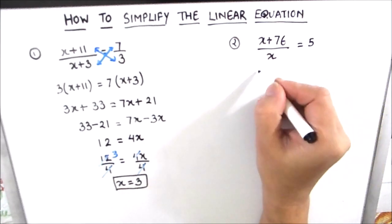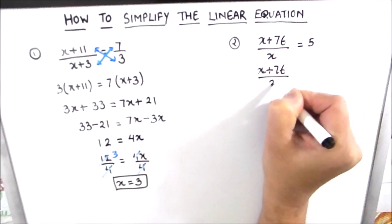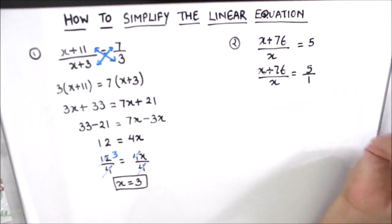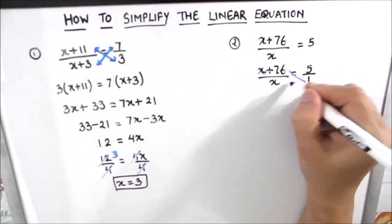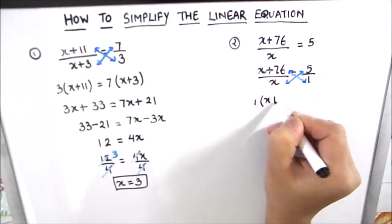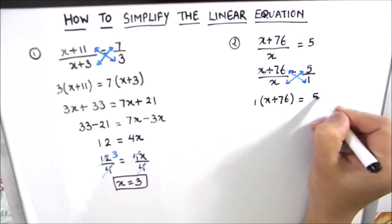So we can rewrite the equation as x plus 76 divided by x is equal to 5 divided by 1. Now we can use the cross multiplication method to simplify the equation. So we will cross multiply. This is 1 times x plus 76 is equal to 5 times x.